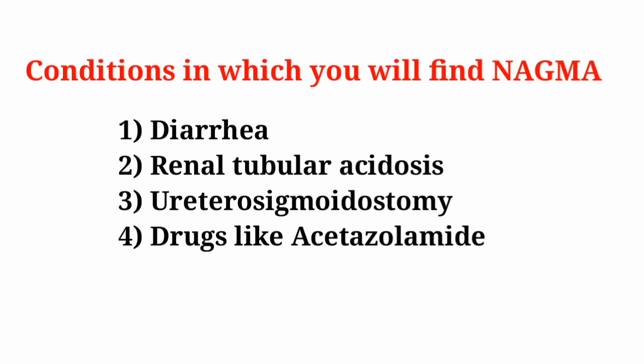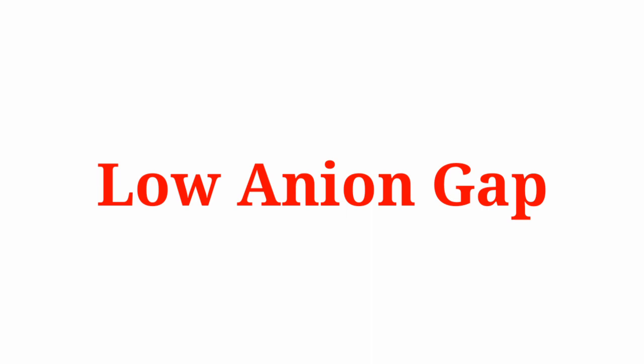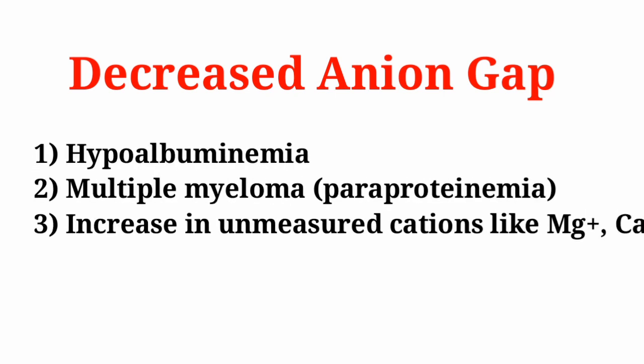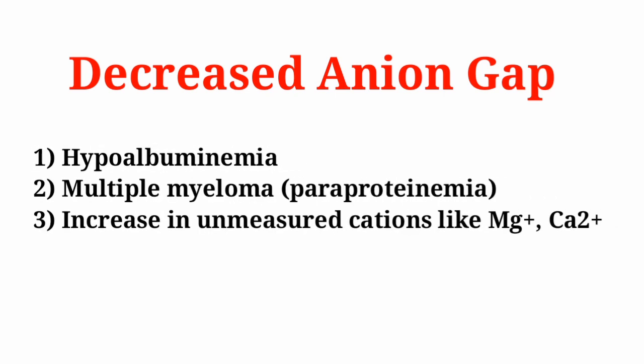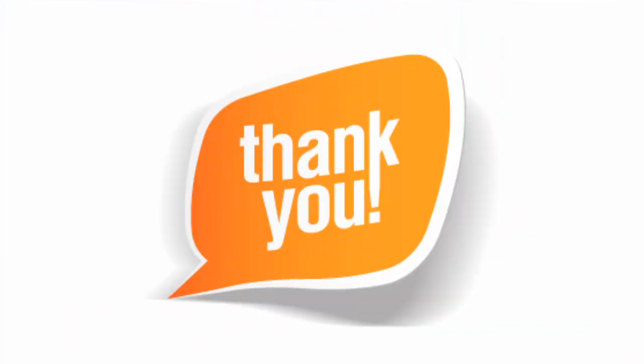Conditions with normal anion gap metabolic acidosis include diarrhea, renal tubular acidosis, ureterosigmoidostomy, and drugs like acetazolamide. Regarding low anion gap: it is seen in hypoalbuminemia, where loss of anionic albumin is replaced by measured chloride and bicarbonate. In multiple myeloma with paraproteinemia, the cationic protein replaces the commonly measured cation sodium, and a similar mechanism occurs in hypermagnesemia and hypercalcemia.